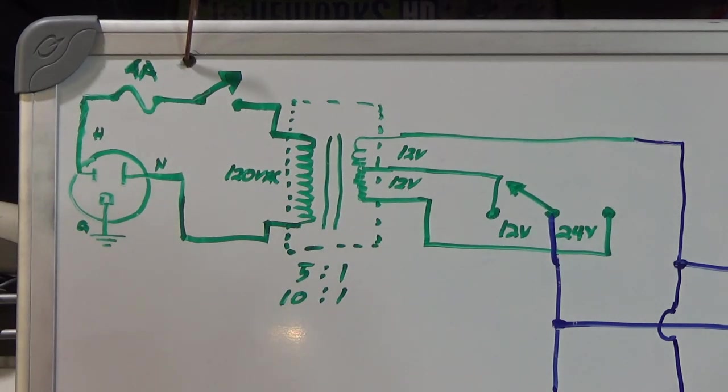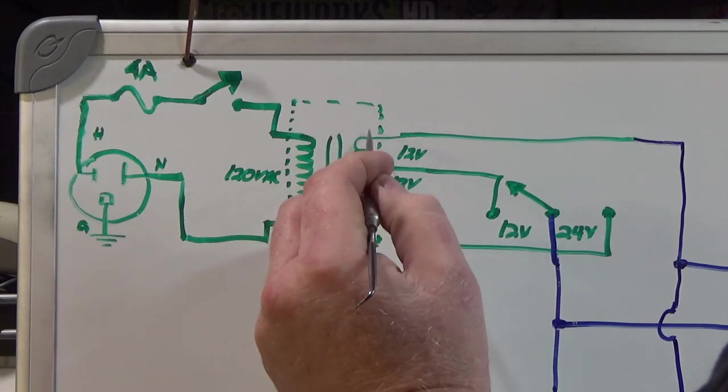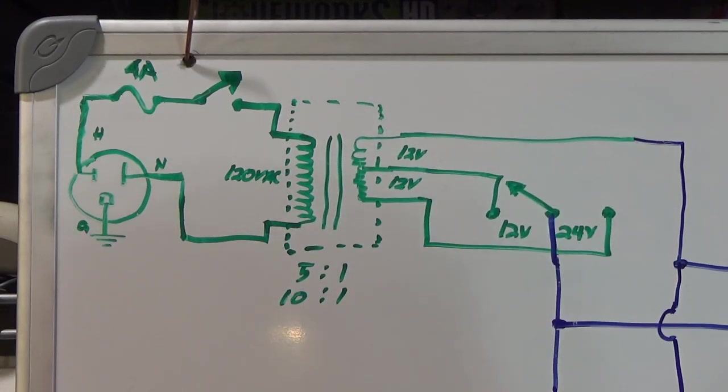Another really good advantage of a transformer, which you don't get in a lot of modern switching supplies, some of them but not all of them, is you get galvanic isolation between the input and the output. What I mean by that is the current flowing in this side is never directly electrically coupled to the other side. It is magnetically coupled instead, which gives you isolation, which can prevent some electrocution issues.